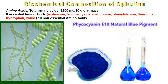Coming to the amino acids, total amino acids contribute about 6200 mg per 10 gram dry mass of spirulina. Eight essential amino acids such as isoleucine, lysine, methionine, phenylalanine, threonine, tryptophan, and valine are all present, along with 10 non-essential amino acids. Lipids contribute about five to seven percent of the dry weight; free fatty acids such as omega-3 and omega-6 are also present, mainly omega-linolenic acid, palmitic acid, oleic acid, neutral lipids, galactolipids, and polar lipids especially sulfolipids.